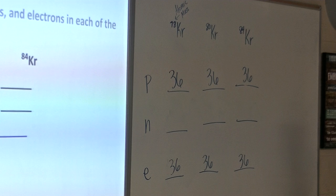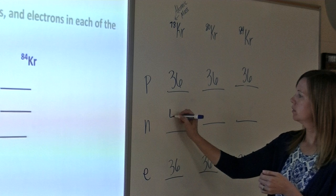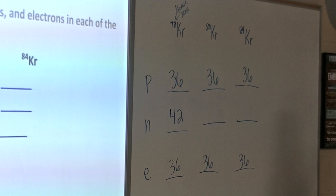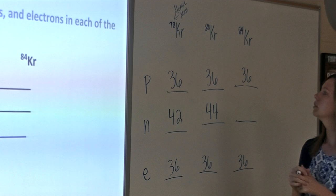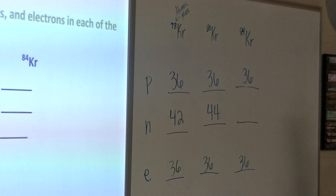78 minus 36. Okay, it gives you? 42. Great. Okay, how about the next one? We have krypton-80. Daniel? 44. Okay, how did you get 44? 80 minus 36. Great. And Matt, how about krypton-84? 84 minus 36. Which gives you? 48. Perfect.